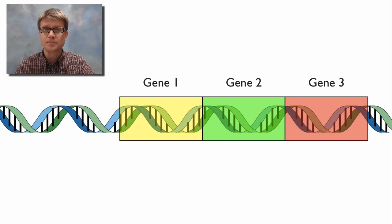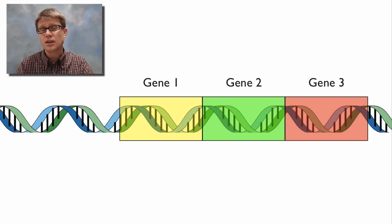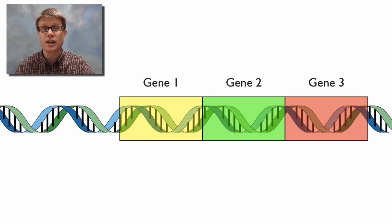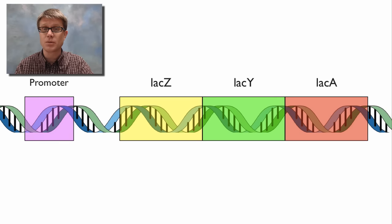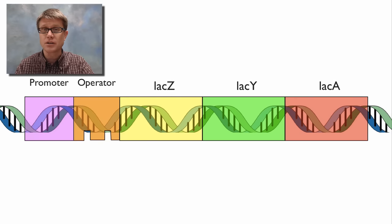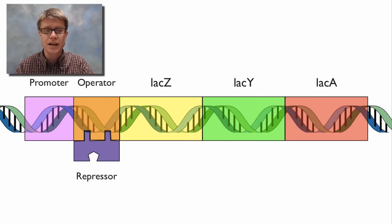The neat thing about bacteria is that if they have a number of different genes used to achieve a certain task, they'll put them right next to each other. As RNA polymerase moves down the DNA and makes all of the messenger RNA and proteins, you're ready to do whatever the job is. We've got the promoter — the region of DNA where RNA polymerase grabs on. We've also got the operator, which acts like an on-off switch. And then the repressor. So it's PROG: Promoter, Repressor, Operator, and then all of the genes.